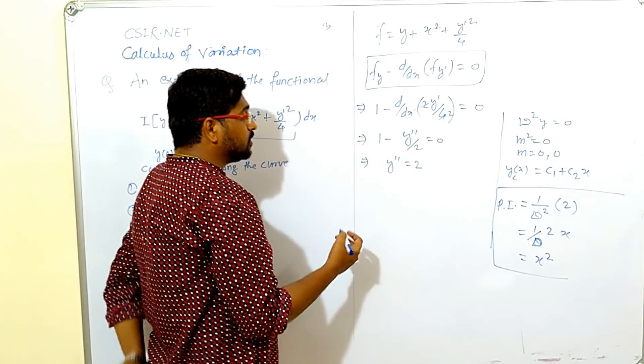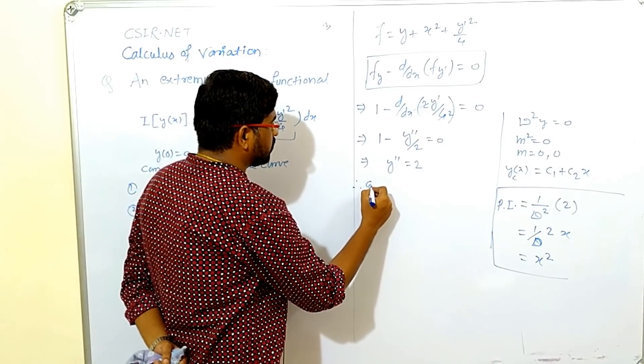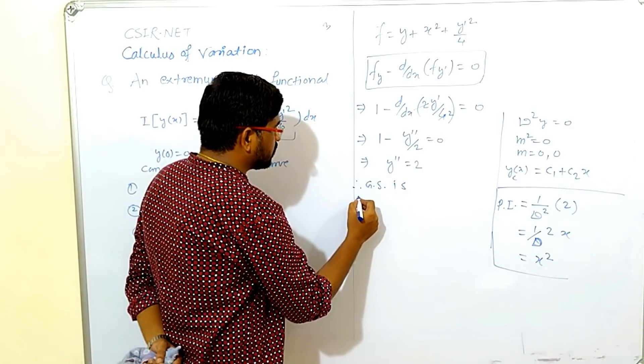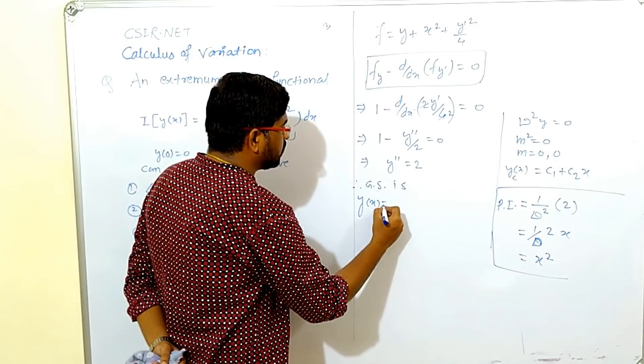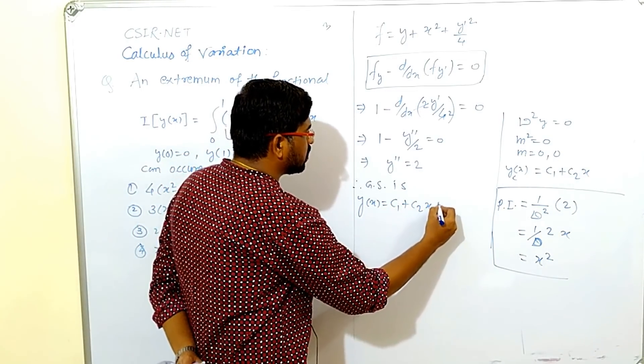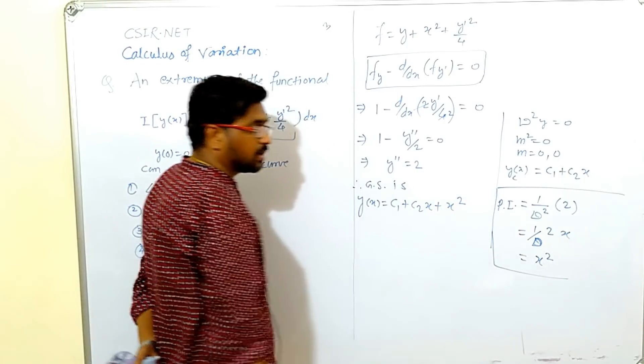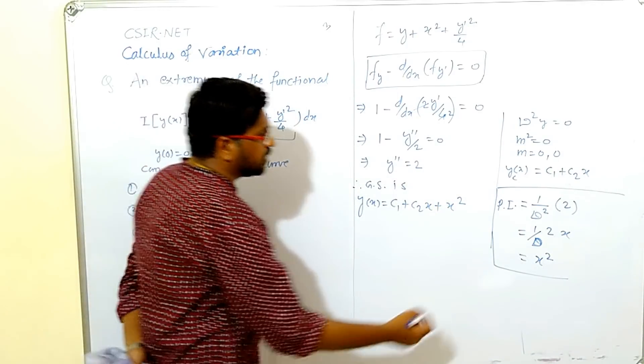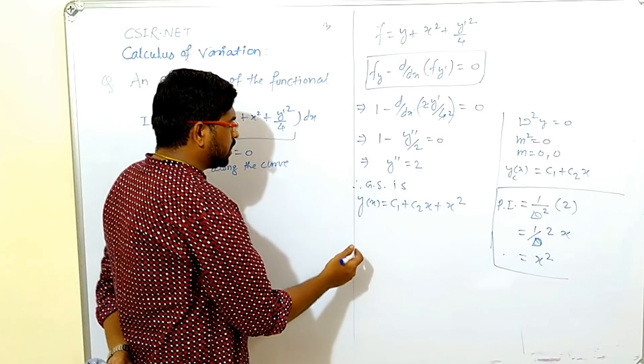What is general solution? Therefore general solution is y of x equals to complementary function first of all, c1 plus c2 x plus x square particular integral. This is particular integral.